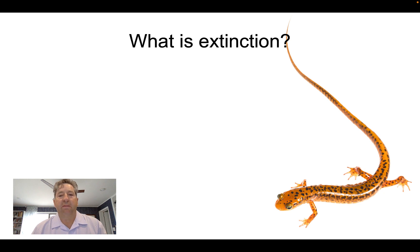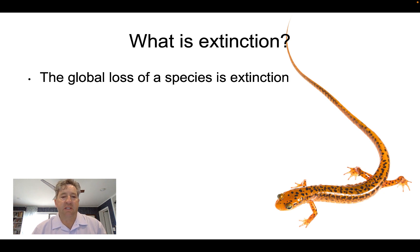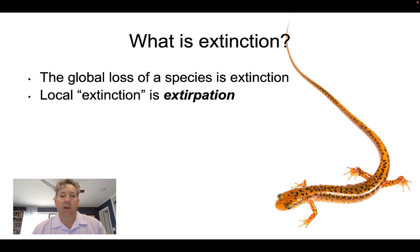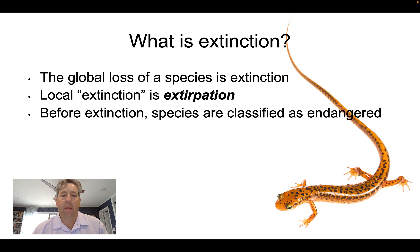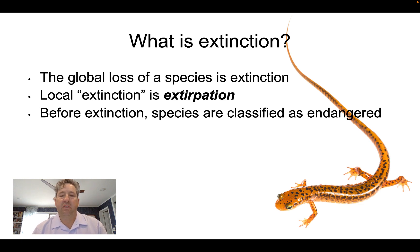Let's briefly define extinction. Extinction is the global loss of a species. At a local scale, that's actually considered extirpation — when a species disappears from a particular part of the earth but is not globally lost, it is considered extirpated from that area. Before extinction, species are classified as endangered, with different levels: the IUCN classifies things as vulnerable, endangered, critically endangered, extinct in the wild, or extinct.